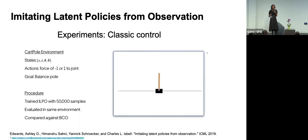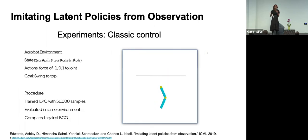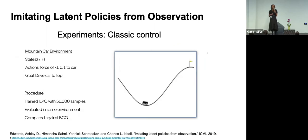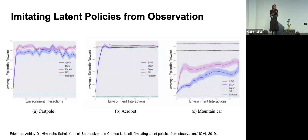We tried this in a few different environments: CartPole, where an agent needs to balance a pole; Acrobot, where it swings itself up; and MountainCar, where a car needs to swing itself to the top of a mountain. We compare against behavioral cloning from observation, which learns dynamics in the environment and requires many environment samples. We're able to learn more quickly in terms of both environment interactions required and reward received over time.